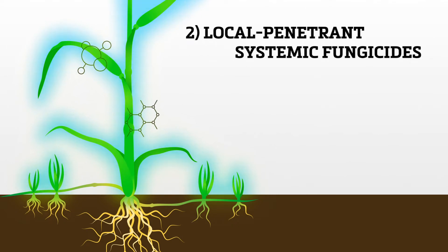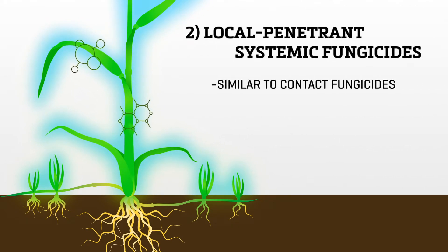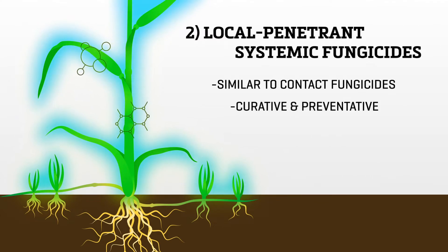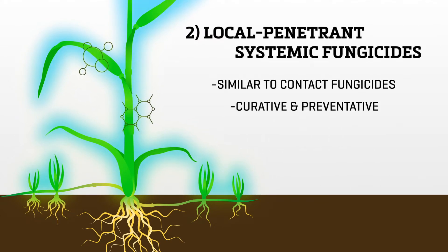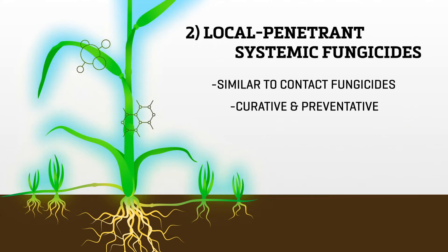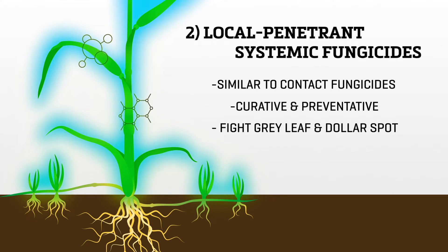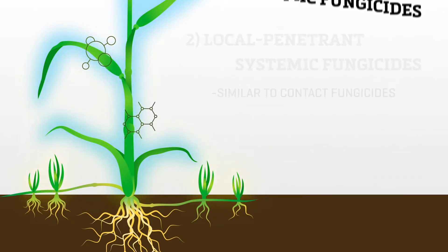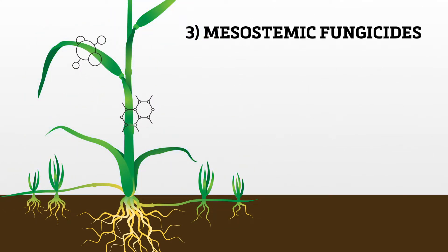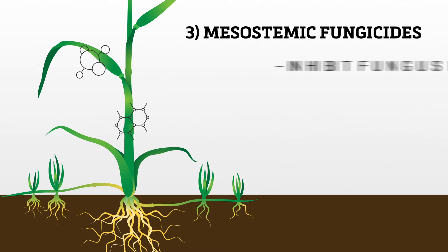Then local penetrant systemic fungicides get the job done. The power in these is similar to the strength of contact fungicides, but they may be used for curative programs as well as prevention. Their approach is to enter the plant while remaining close to the surface to overpower diseases like gray leaf spot and dollar spot.